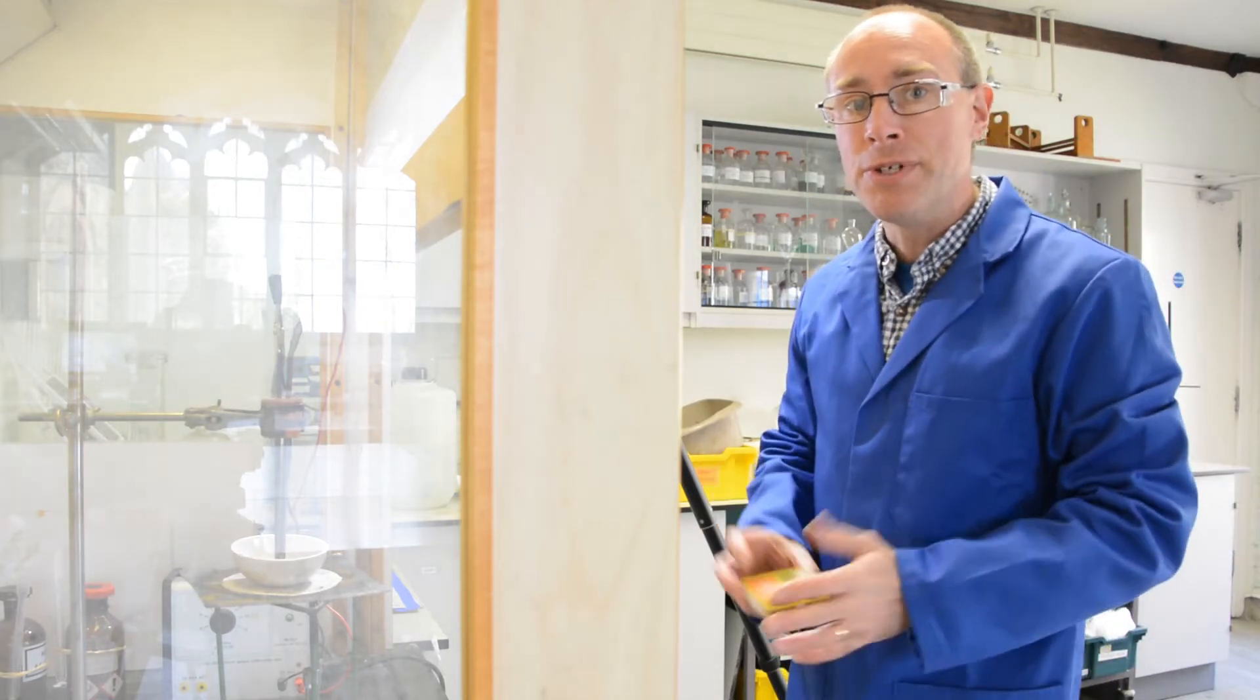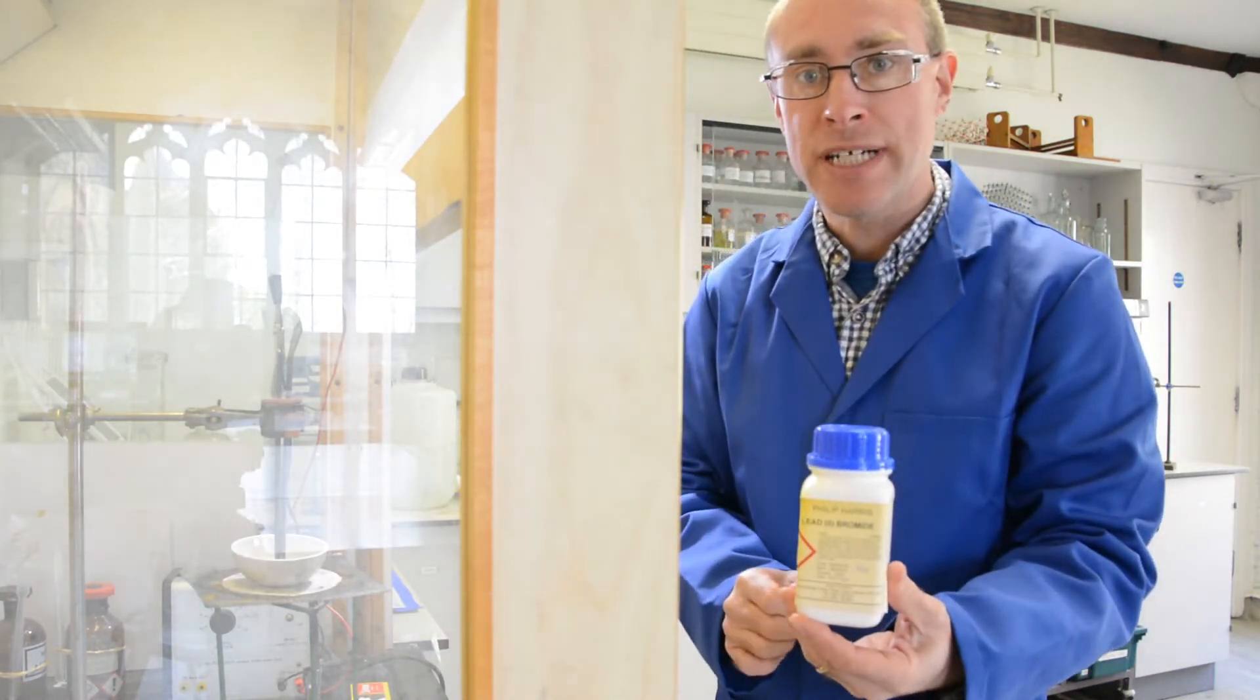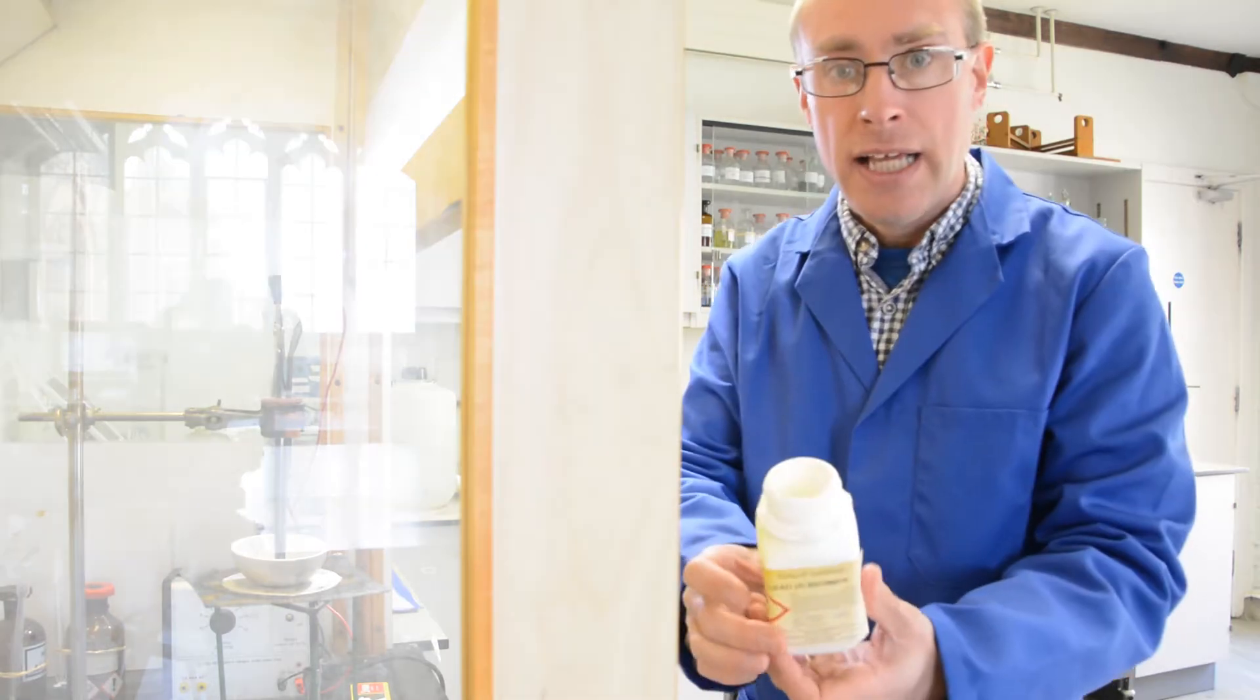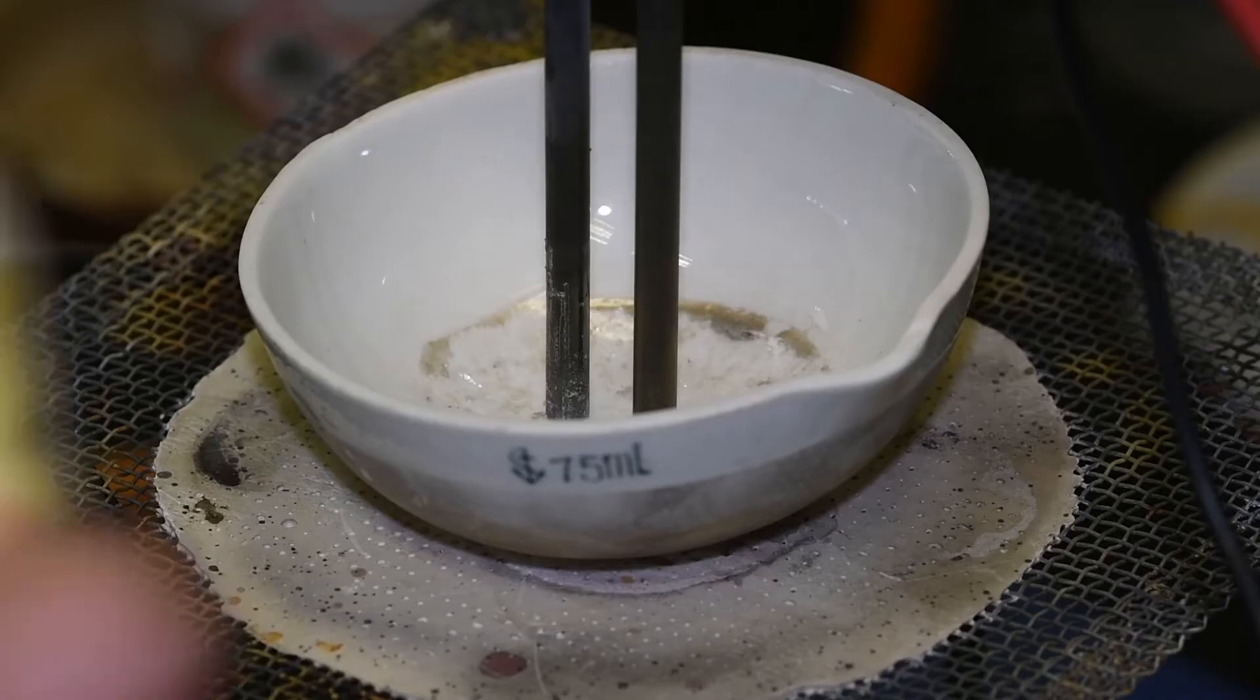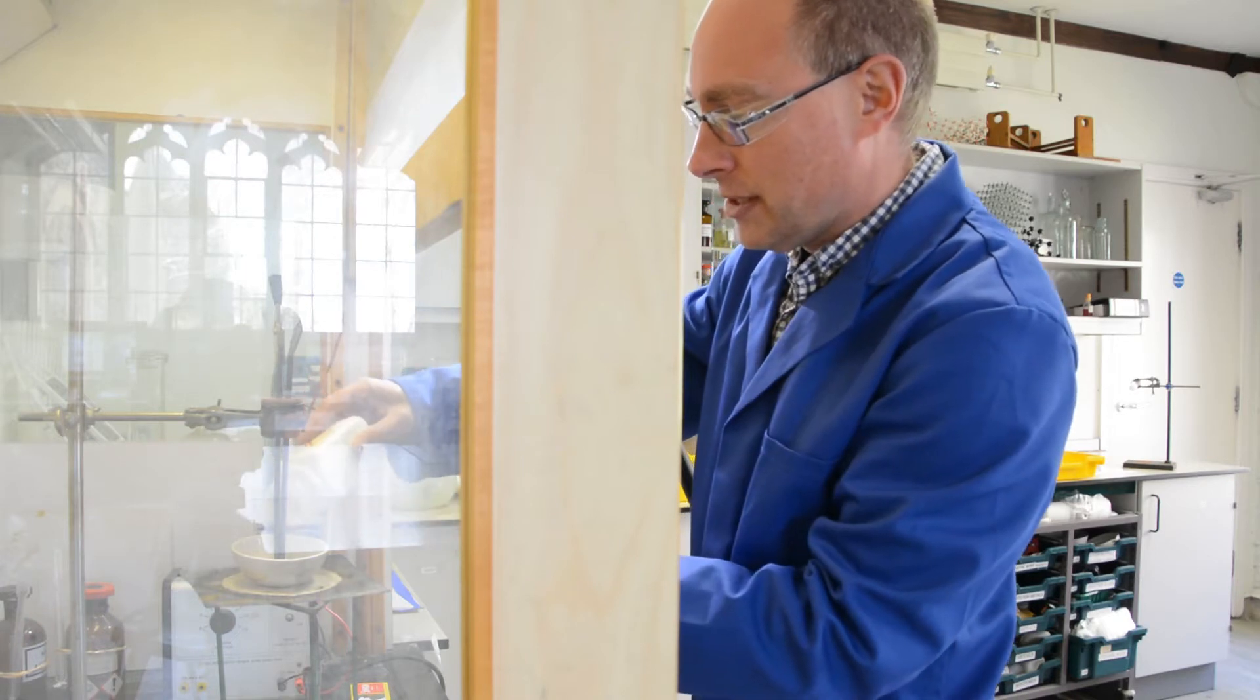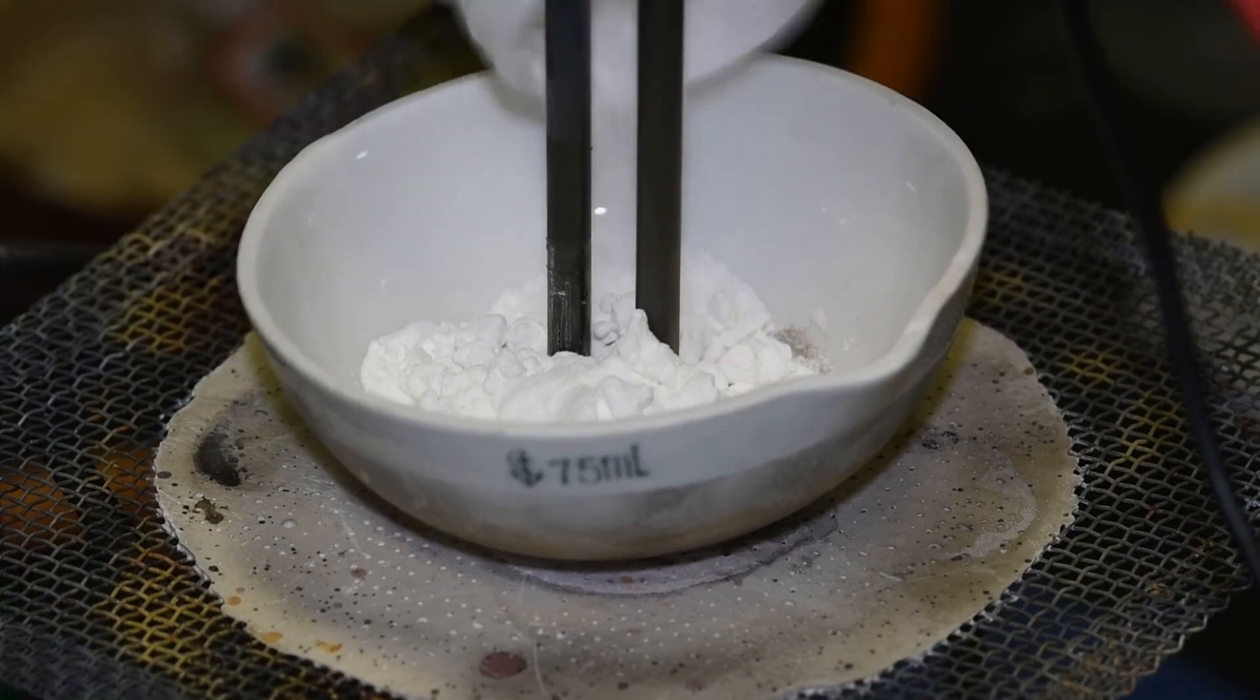In this video I'm going to show you the electrolysis of lead bromide. I've got some lead bromide here, it's an ionic compound and it's a white powder. First of all I'm just going to pour some into this crucible, just completely surround the electrodes in there.